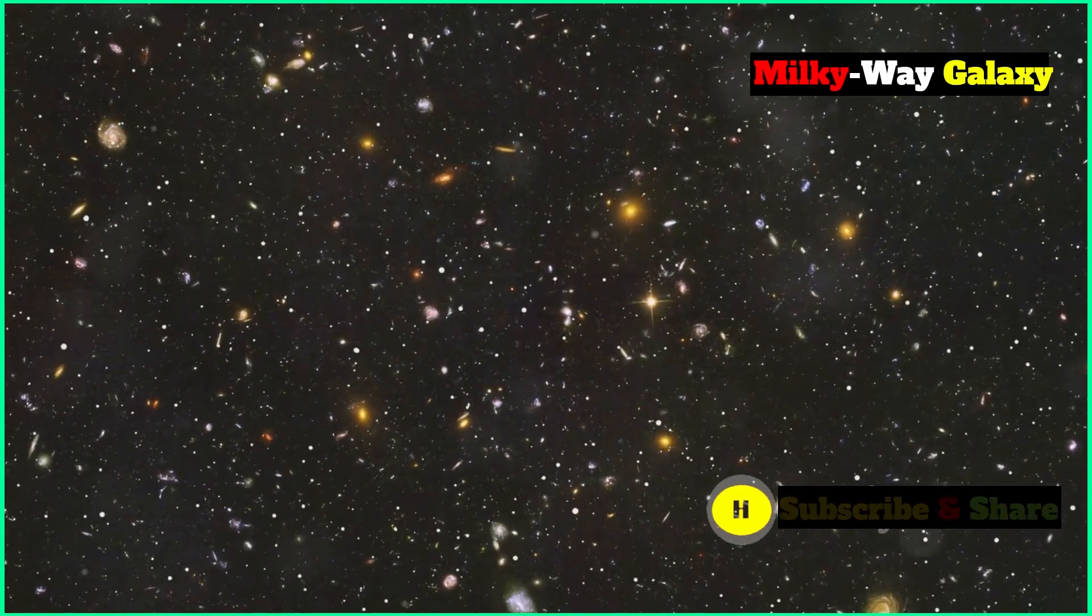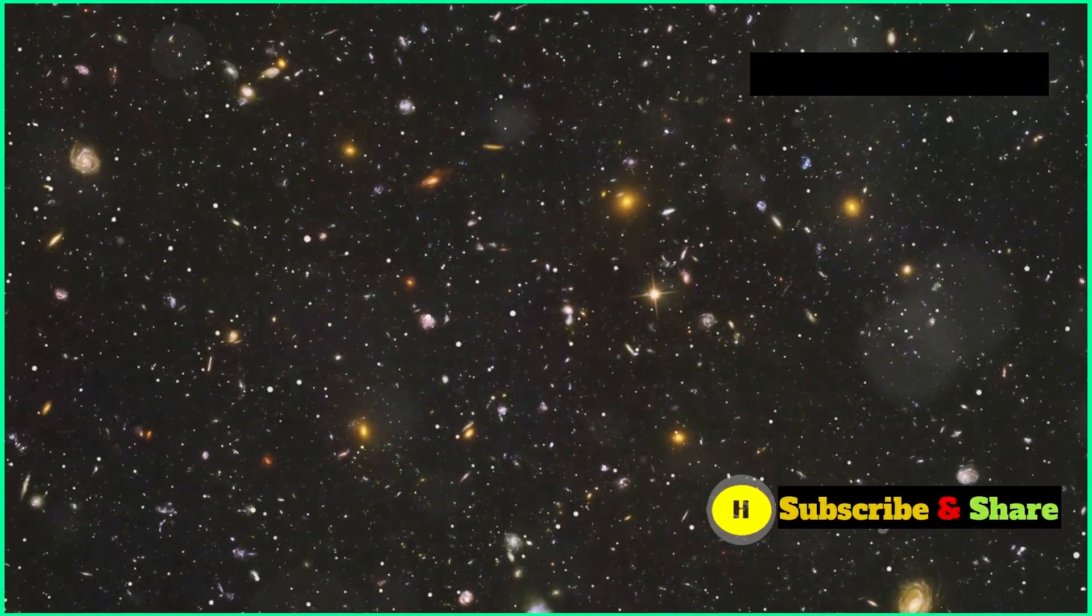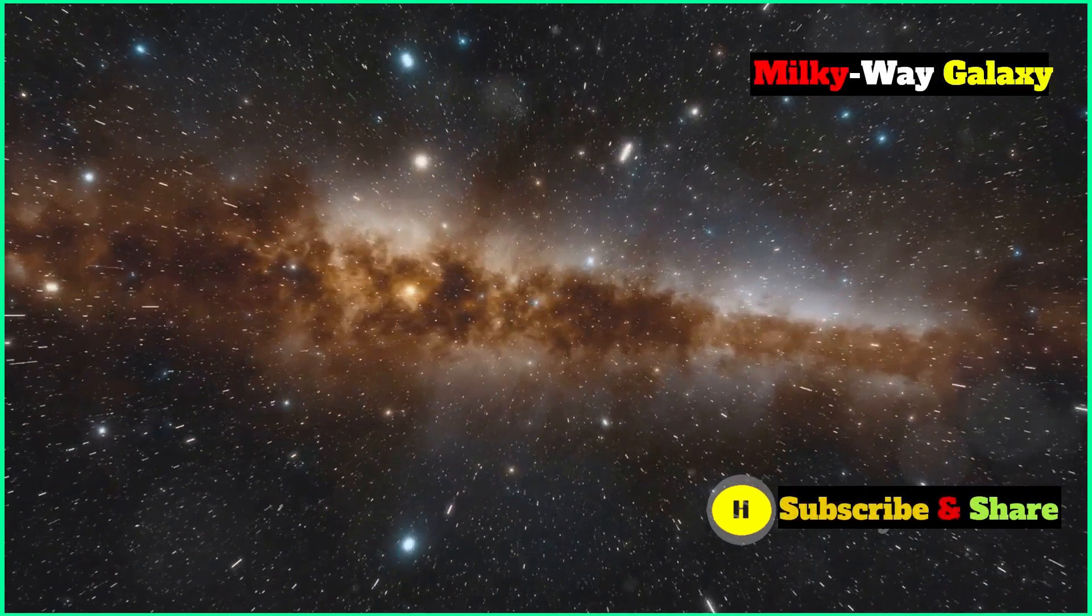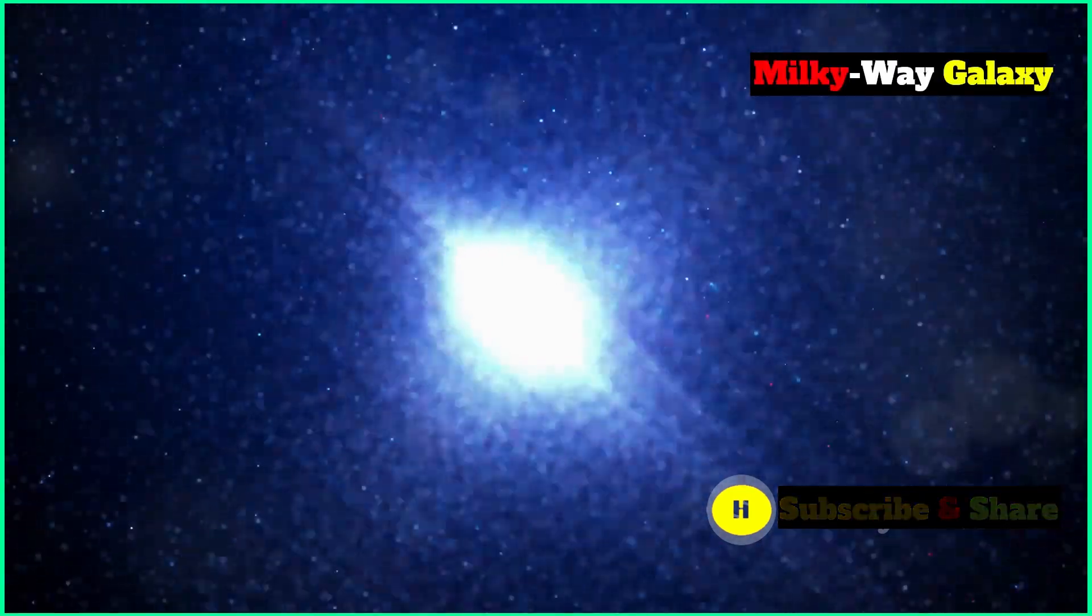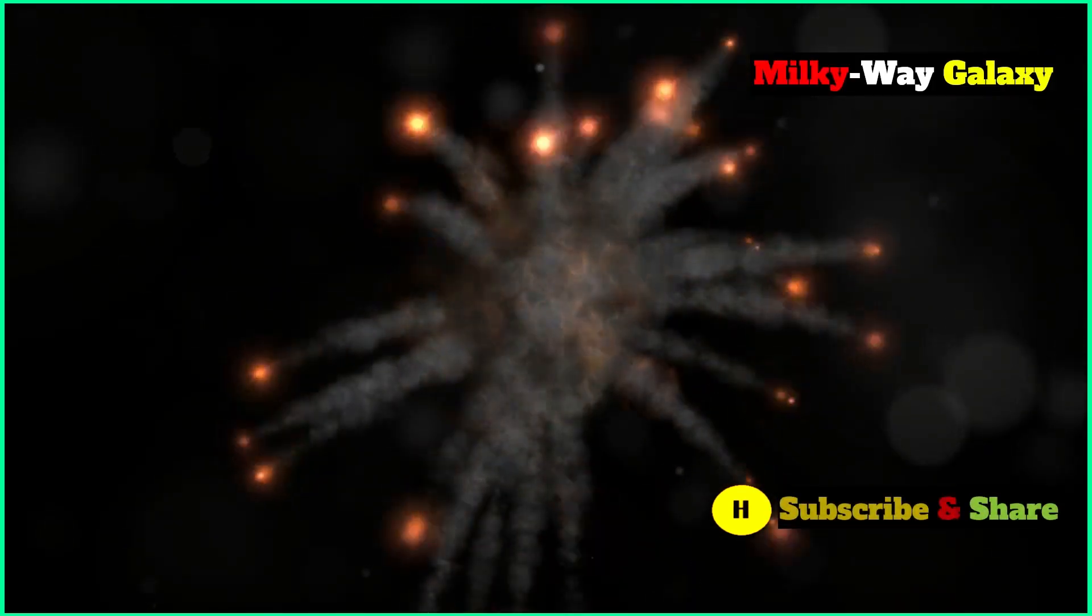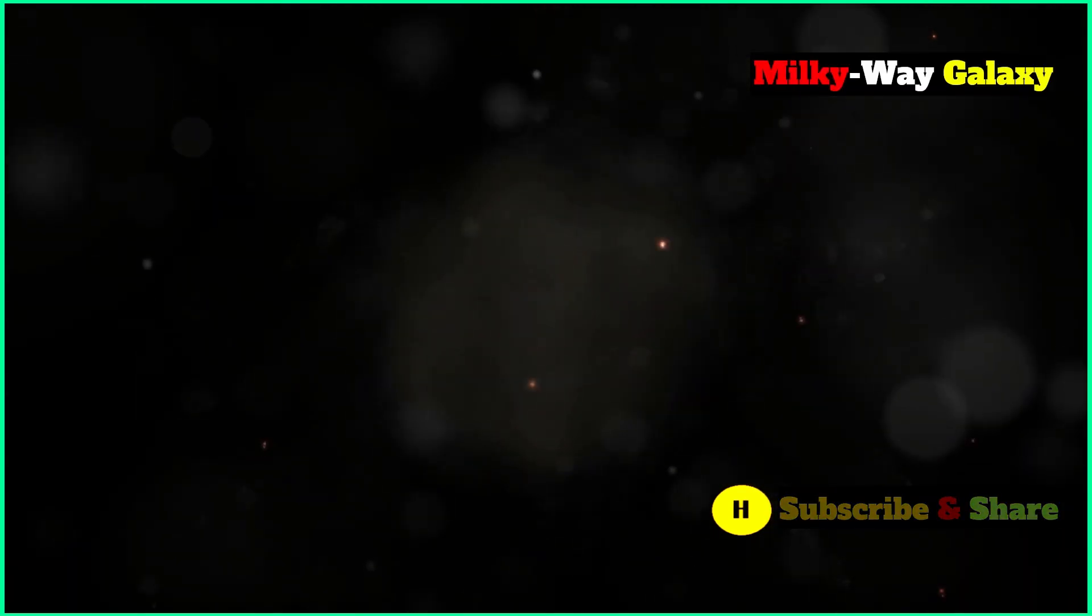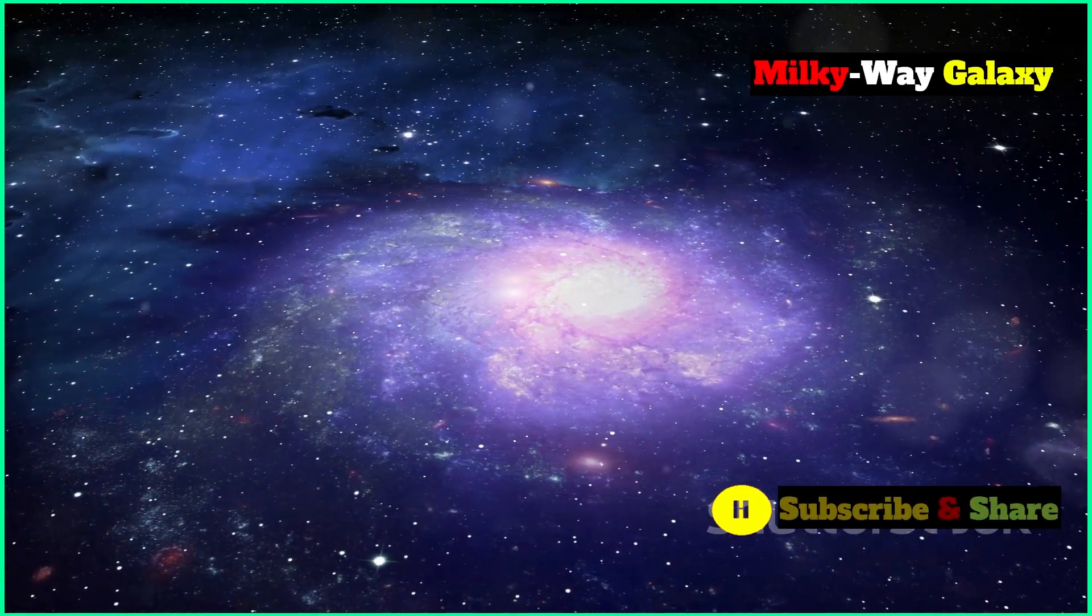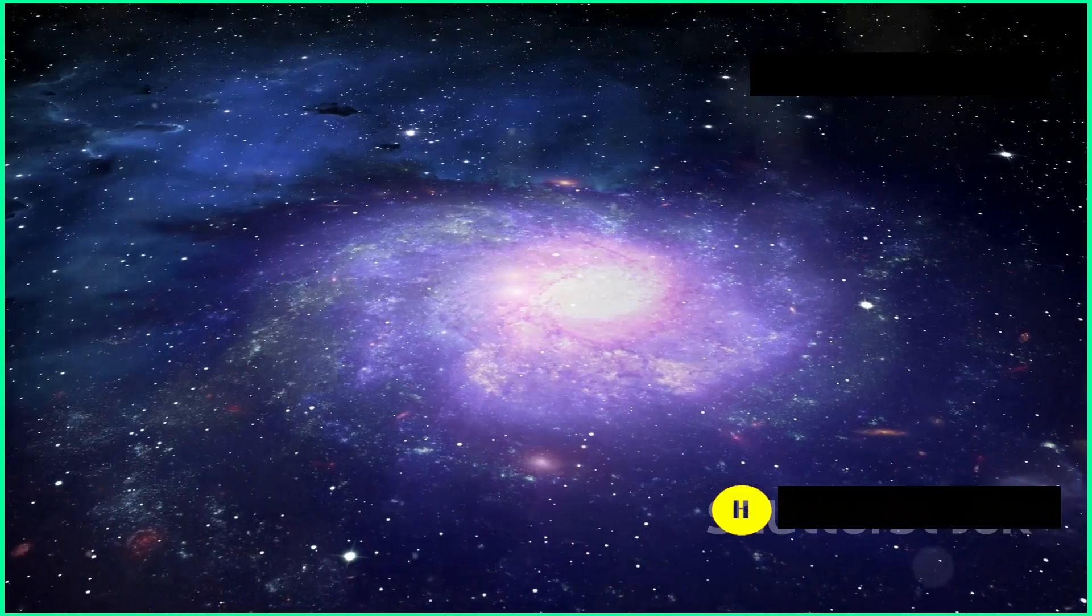Now when galaxies collide, it's not like a sudden smash bang affair. It's more like a slow dance, a bit of a waltz in space. These galaxies, they'll do a fair bit of waltzing, passing through each other a few times. Each time they pass, they'll get a bit bent out of shape, stretching out like fairy floss, leaving trails of stars and gas. This cosmic dance can go on for billions of years, longer than a snag sizzle at Bunnings.